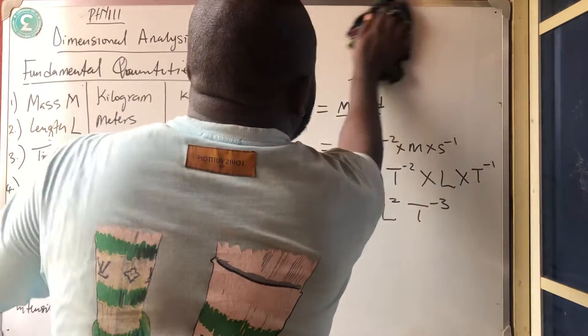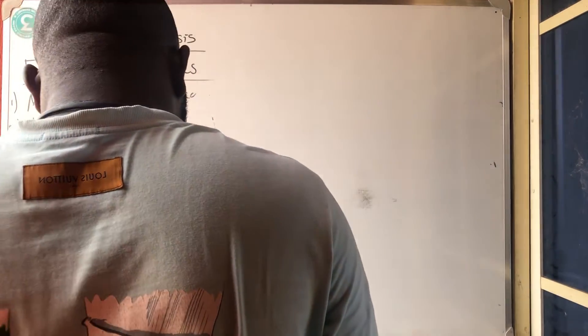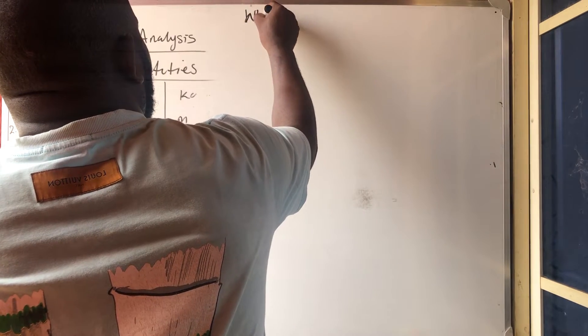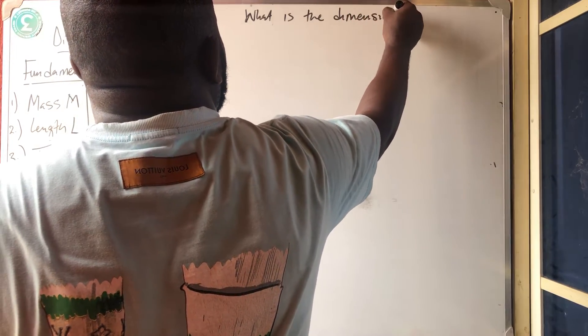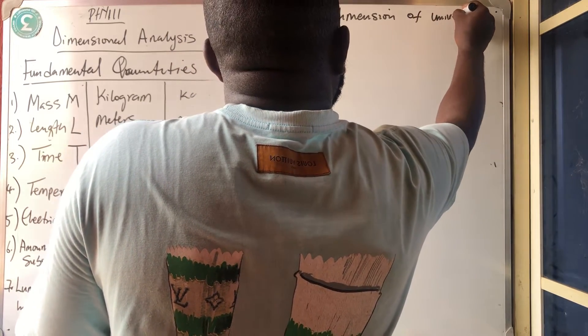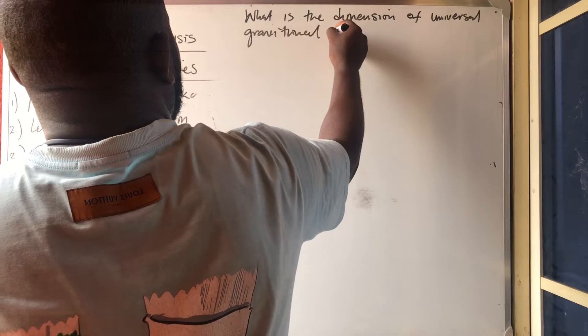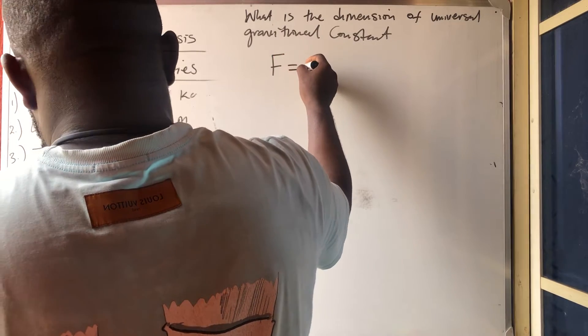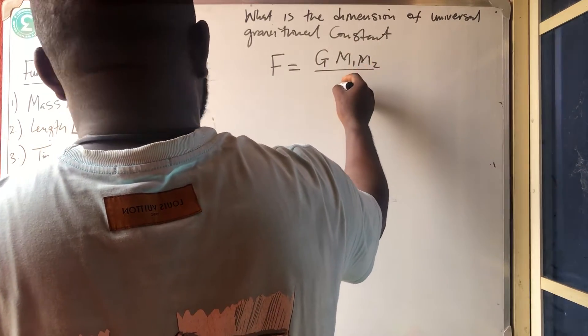So number 16. What is the dimension of universal gravity? Universal gravitational constant if F is equal to G, M1, M2, all over R squared.